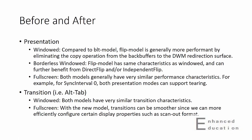For a windowed application, flip model will generally be more performant since it can eliminate the copy operation from the back buffers to DWM's redirection surface. For a borderless window application, the same benefits apply, but it can further benefit from flip model optimizations such as direct flip and independent flip. Finally, for a full screen exclusive application, before and after should have very similar performance characteristics — for example, both models can support tearing for vSync off presents. As for transitions such as alt-tab or window mode changes, full screen exclusive applications actually stand to benefit from smoother transitions since we can more efficiently configure display properties such as scan-out format.